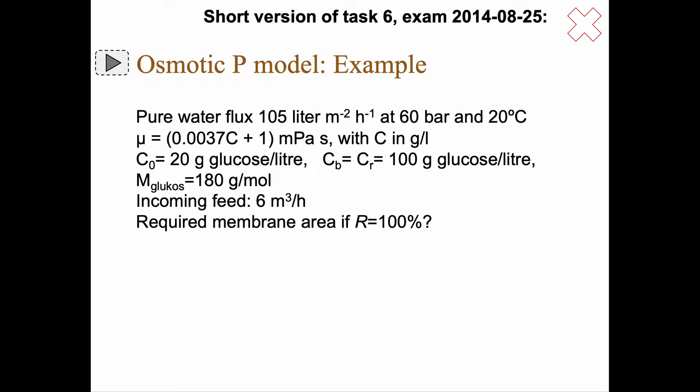You have a pure water flux or clean water flux of 105 liter per square meter and hour. Note that we have now a non-SI unit. This is at 60 bars and 20 degrees centigrade. You have an equation for the viscosity which is 0.0037 times the concentration plus 1 in millipascal seconds with the concentration in gram per liter. C₀ is 20 gram of glucose per liter and the concentration in the retentate is 100 gram of glucose per liter.